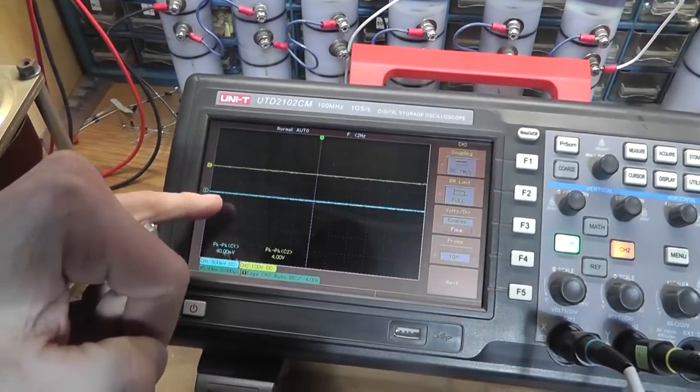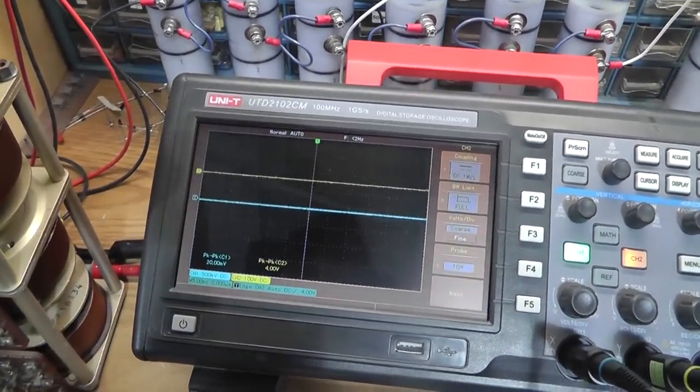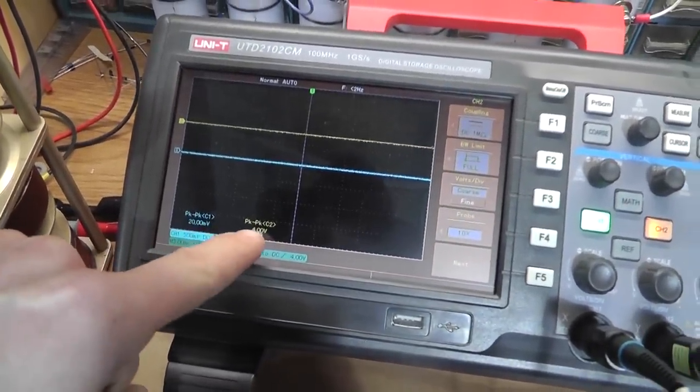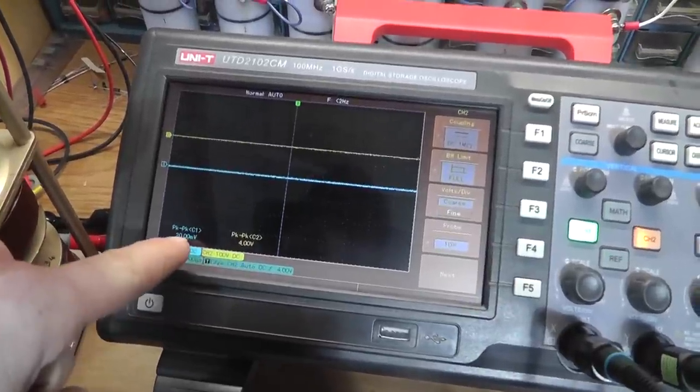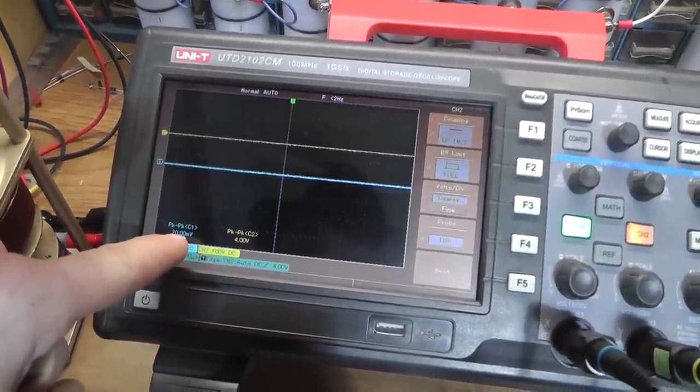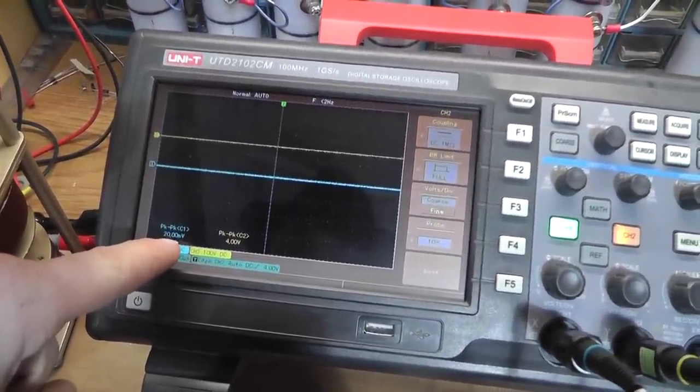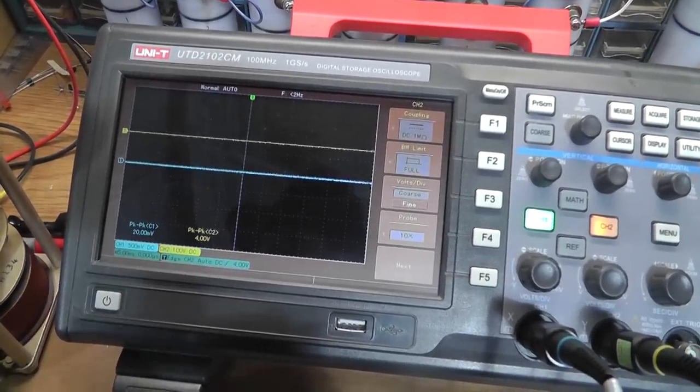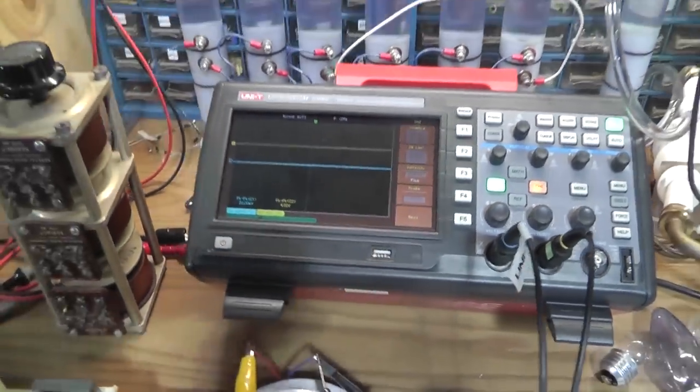So the blue trace is the current, the yellow trace is the voltage. I just have here a peak to peak so we can kind of get a reference point. The peak to peak here is actually going to be our current, but it's just a measurement in the voltage across that resistor. The yellow here is actually a true voltage reading peak to peak.